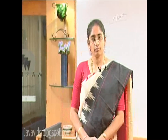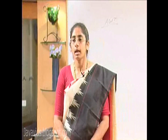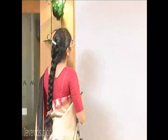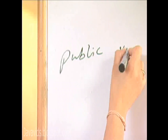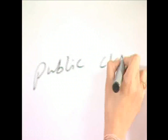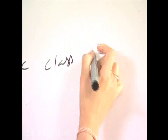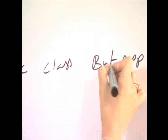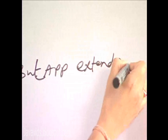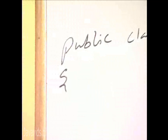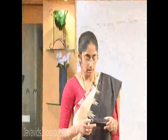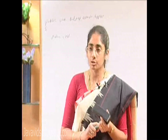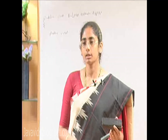Now let's look at how to create these components and place them onto our application or an applet. Say you are writing an applet program and you would like to place a button on an applet. Where are you going to create these components? You need to ask: how many times do I need to create a component? I need to create a component only once, so put it in the init method.